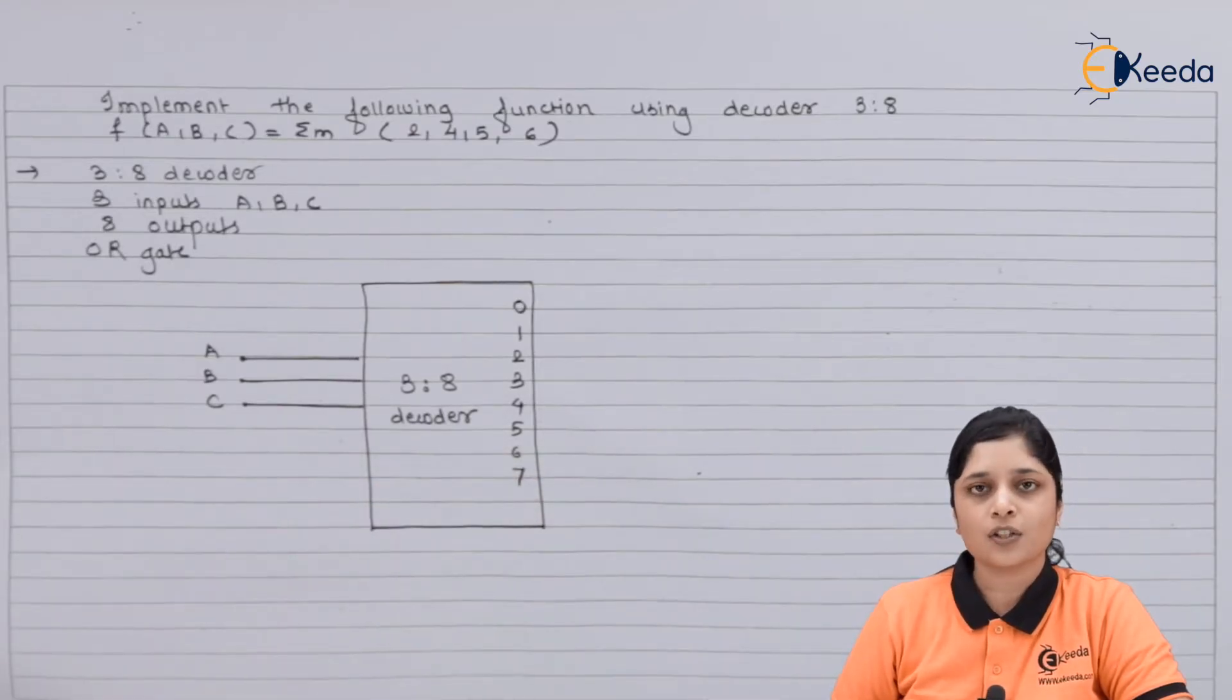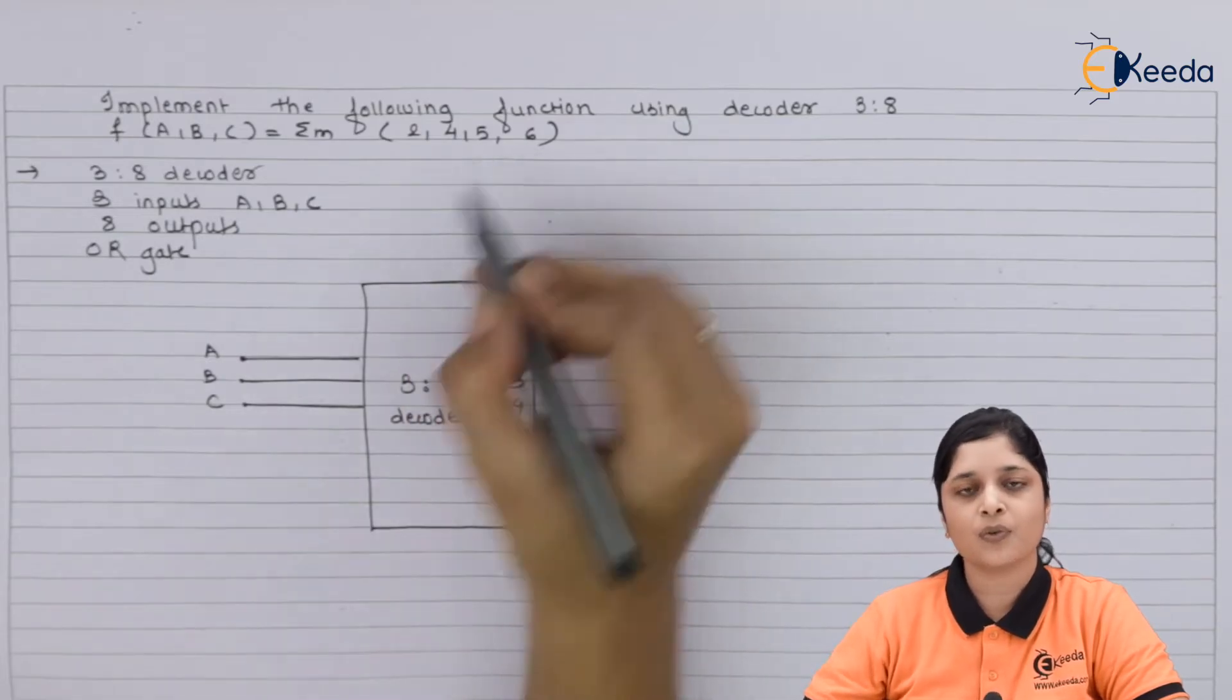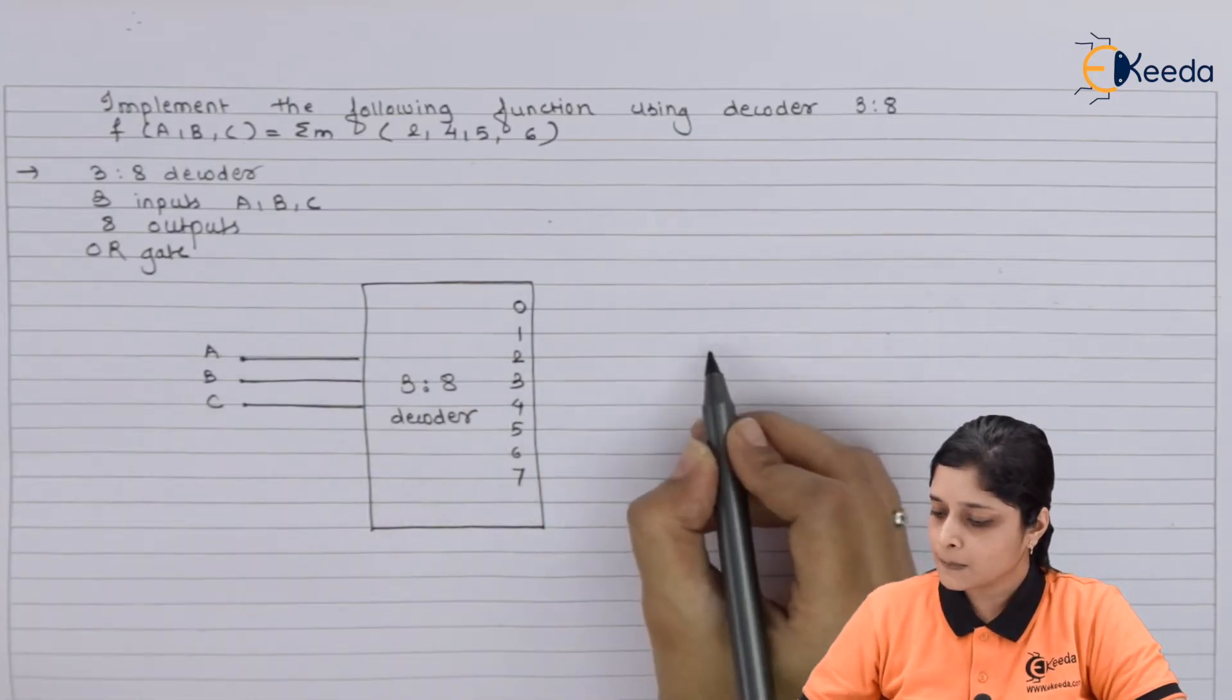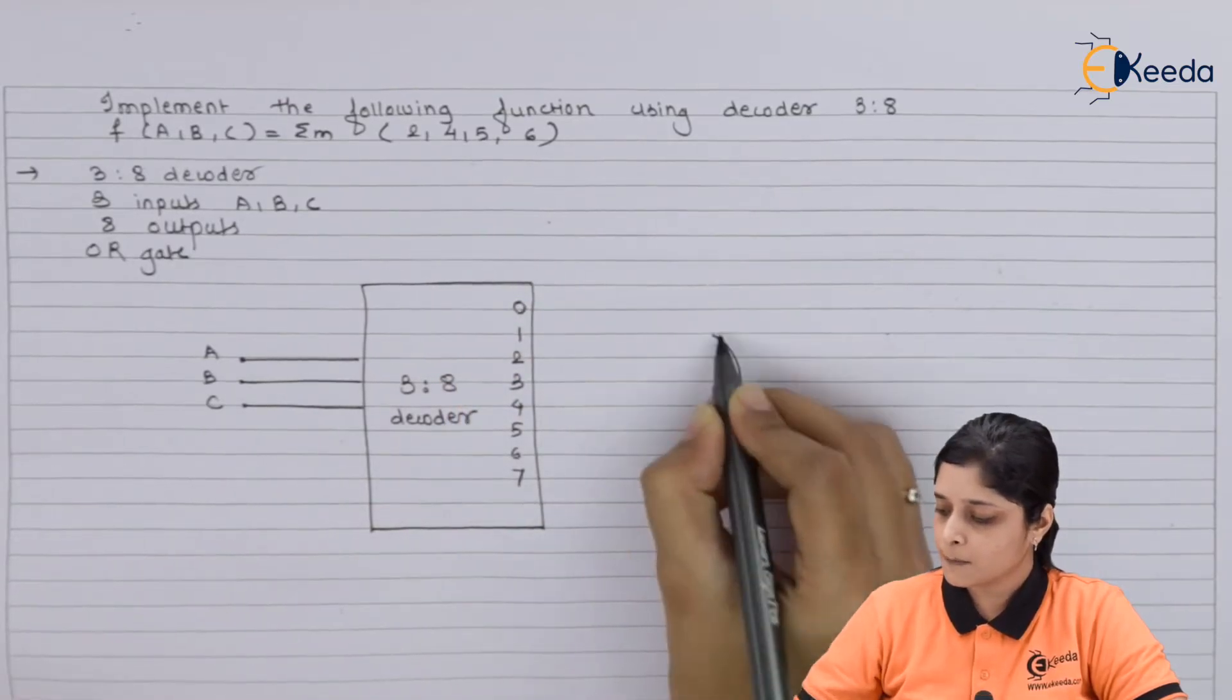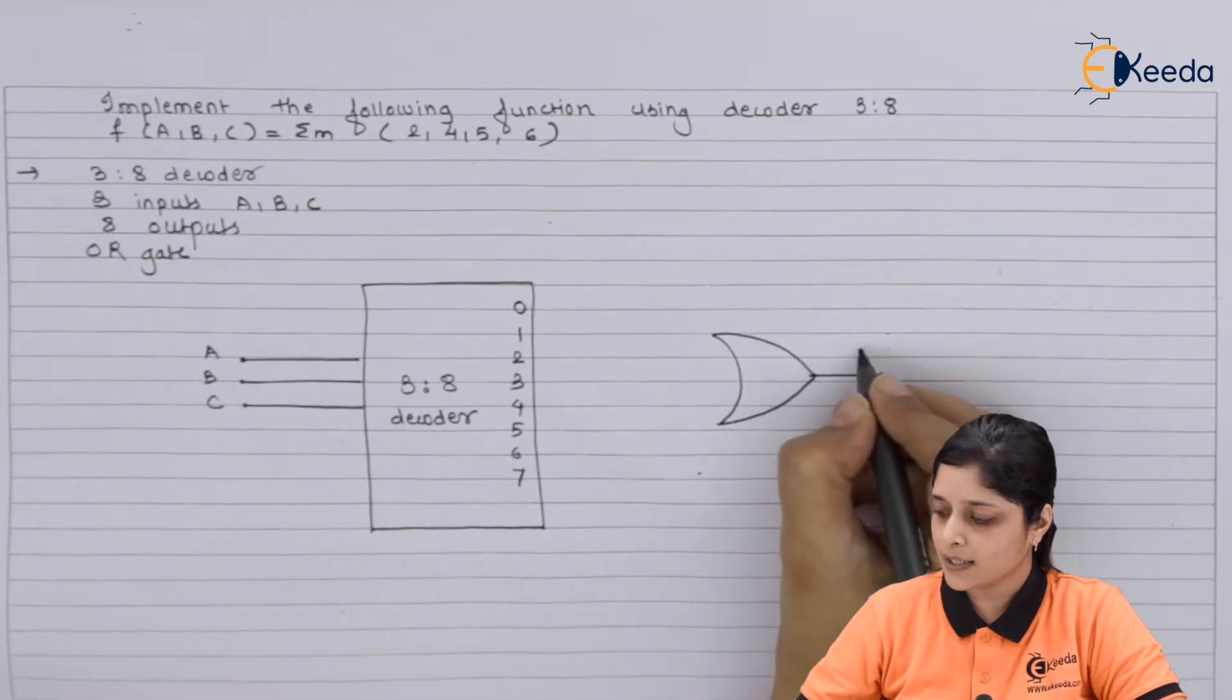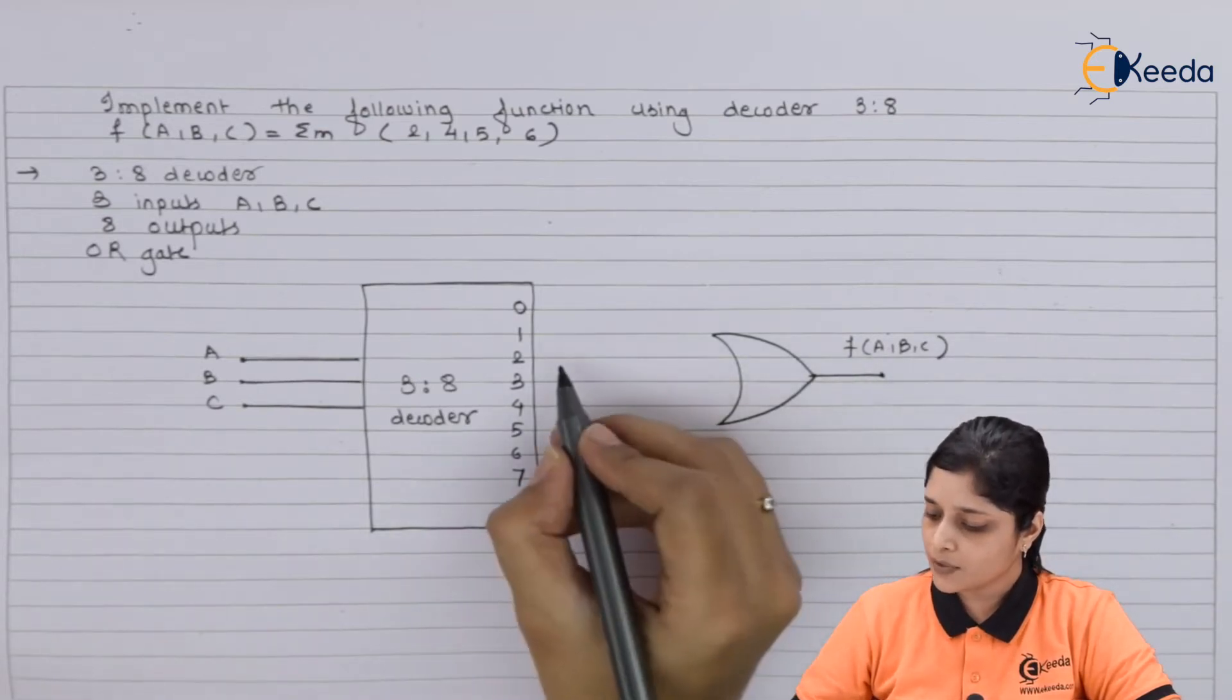Now the logic is what? Whatever the terms present in the given expression you have to apply it to logic 1. So we will connect all the terms that is 2, 4, 5, and 6 to the OR gate. And finally you will get your output that is f(a,b,c).